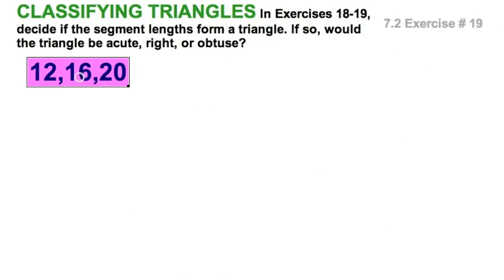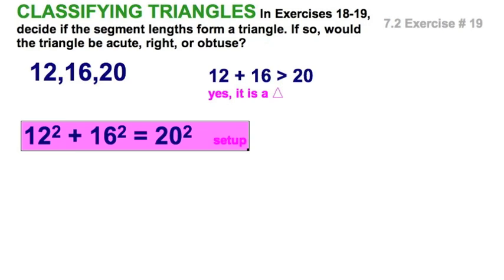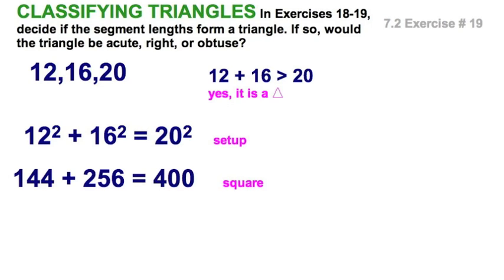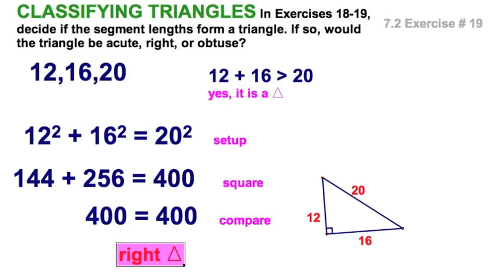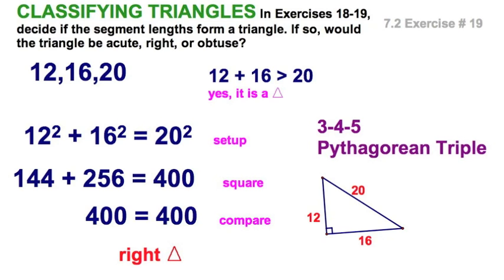Well, how about 12, 16, 20? Let's see what we've got here. First, the cursory check. The two smaller sides add up to more than a third. So it's indeed a triangle. Well, see that. And let's set them up. And we'll perform those squares. And let's see. Hmm. Compare. Looks like a right triangle to me. Of course, you could have just looked at those three numbers and said, that's a 3, 4, 5 Pythagorean triple.